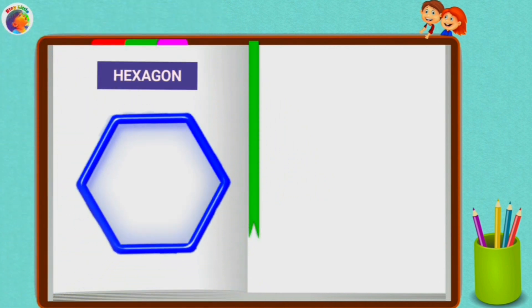Hexagon. It has six sides. 1, 2, 3, 4, 5, 6. And six corners.